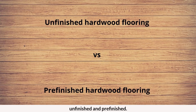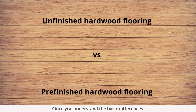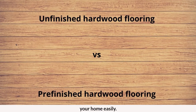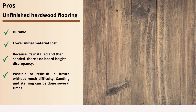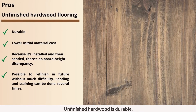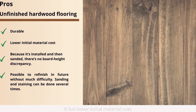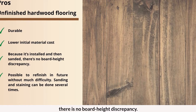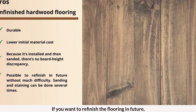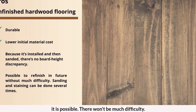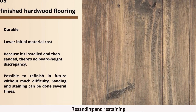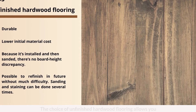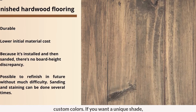Hardwood comes in two different types: unfinished and pre-finished. Once you understand the basic differences, you will be able to make the right choice easily. Unfinished hardwood is durable and has a lower initial material cost. Because it is sanded after installation, there is no board height discrepancy. It is possible to refinish the flooring in the future — resanding and restaining can be done several times. The choice of unfinished hardwood also allows you custom colors if you want a unique shade.